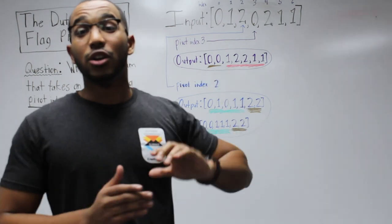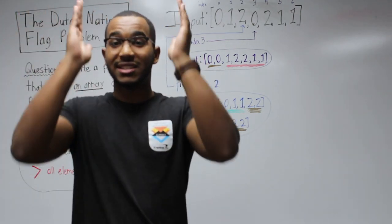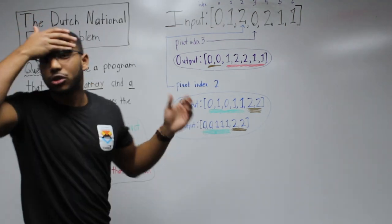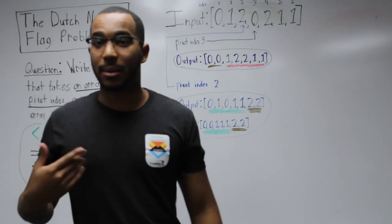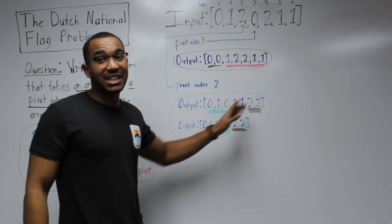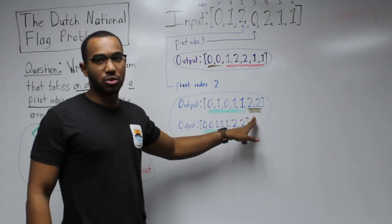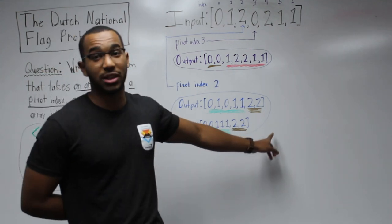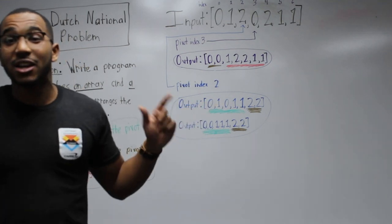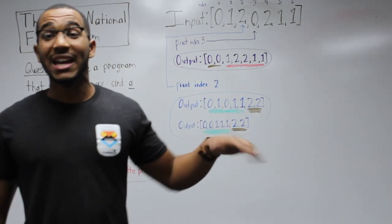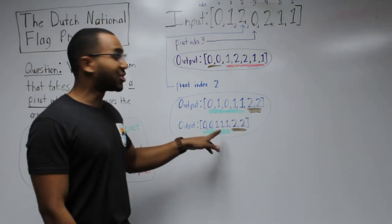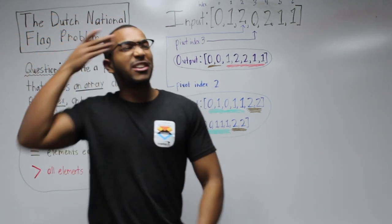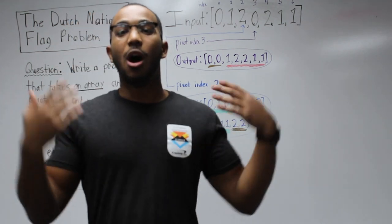We need to repartition our array so all numbers less than two appear to the left of two, all numbers equal to two stay in one section, and all numbers greater than two are to the right. Here are two valid partitioning schemes our program could output. Both are valid because we partitioned based on the rules — everything less than two is to the left. This second one is more perfect because we have a fully sorted order.